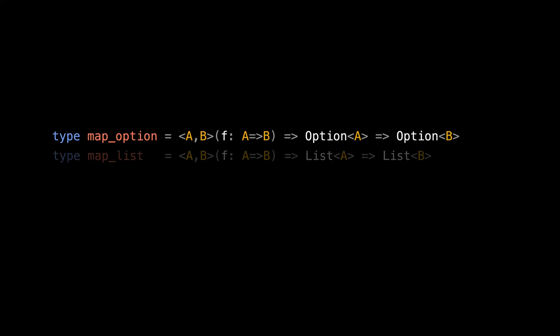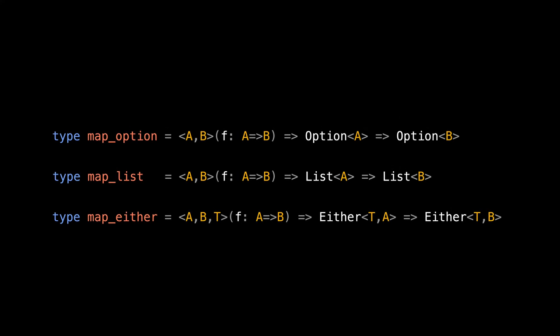Alright, we learned about map of option, list, and either. Option and list wrap one type and either wraps two types. It seems that in order to define a functor, our type constructor needs to have at least one type parameter.